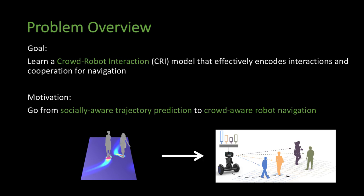Social-aware trajectory prediction has been greatly improved in recent years. However, integrating the interaction knowledge into the decision-making process for crowd-aware navigation remains challenging.